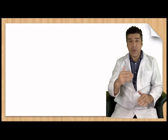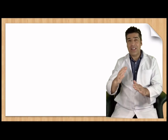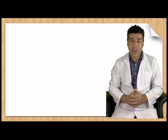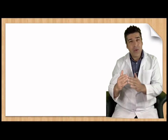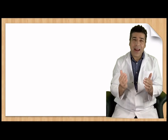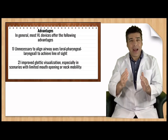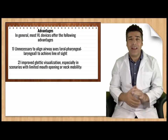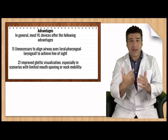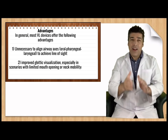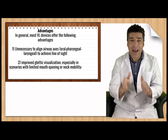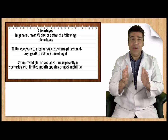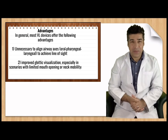The second advantage: with direct laryngoscopy you have to align the airway — the oral axis, pharyngeal axis, and laryngeal axis. When doing video laryngoscopy, you don't need to align the airway. The patient can be placed in the neutral position and you can insert the video laryngoscope and perform endotracheal tube intubation.